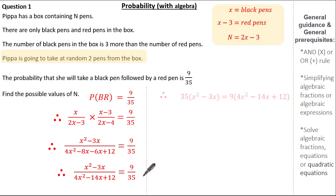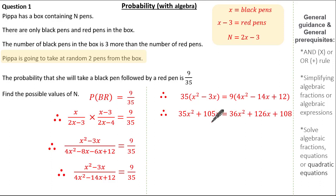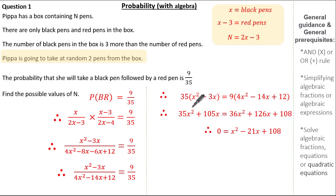Now I'm going to cross multiply. 35 multiplied by (X squared minus 3X) on one side, and (4X squared minus 14X plus 12) multiplied by 9 on the other side. Expanding gives 35X squared minus 105X equals 36X squared minus 126X plus 108. Collecting like terms to form a quadratic, we subtract 35X squared and 105X from both sides, giving a quadratic equating to zero.